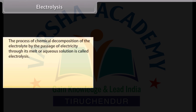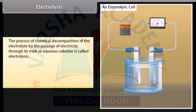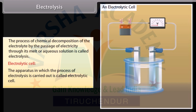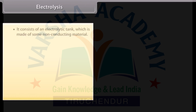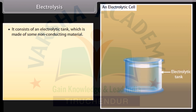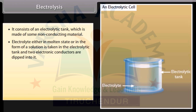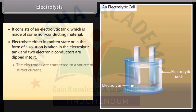Electrolysis. The process of chemical decomposition of the electrolyte by the passage of electricity through its melt or aqueous solution is called electrolysis. Electrolytic cell — the apparatus in which the process of electrolysis is carried out — consists of an electrolytic tank made of non-conducting material. The electrolyte, either in molten state or in the form of a solution, is taken in the tank and two electronic conductors are dipped into it. The electrodes are connected to a source of direct current.